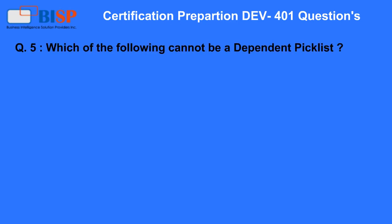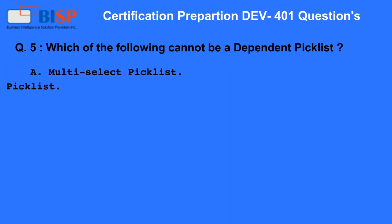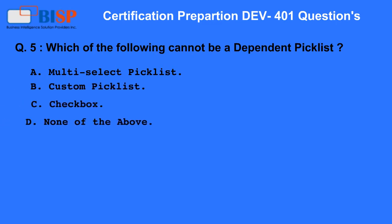Question 5. Which of the following cannot be a dependent picklist? A. A multi-select picklist. B. Custom picklist. C. Checkbox. D. None of the above.